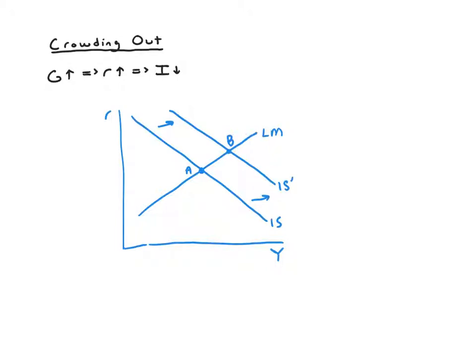So at the same time that government purchases are increasing output because they're increasing the G component and then potentially increasing the consumption component of output, they're simultaneously lowering the investment component. So the overall net increase is not going to be as big as we might have predicted if we just completely ignored this investment part. Pretty much everybody agrees that if you increase government purchases, you're going to increase output a little bit in the short term. But you probably won't increase it as much as maybe a naive analysis would predict because you wouldn't have factored in that you're increasing interest rates and those interest rates are crowding out investment.